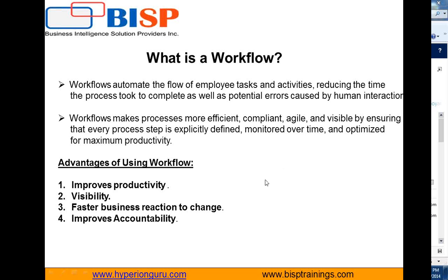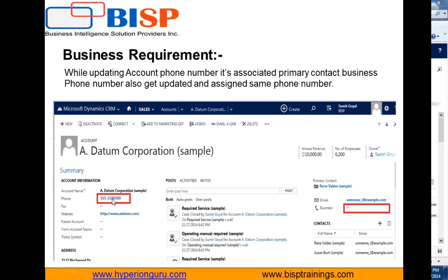Now let's move on to our business requirement. I would like to create a workflow to update the primary contact business phone number as soon as anyone updates the account phone number. As you can see, I've marked in a red box that if the phone number of this particular account, A. Charm Corporation, is updated, I would like to assign the same phone number to its primary contact business phone number. Right now it is blank because the workflow has not been activated yet. We will see first how to set up a workflow, how to create it, and then how to perform this task.